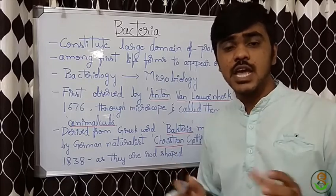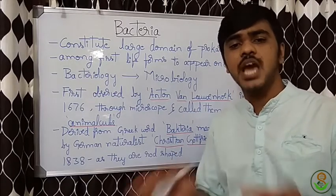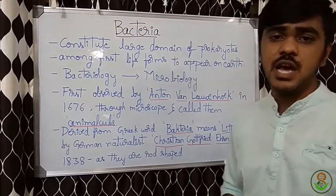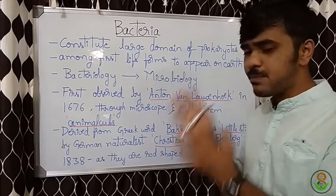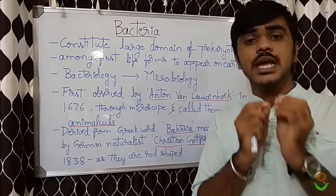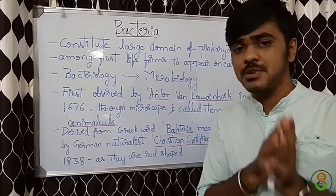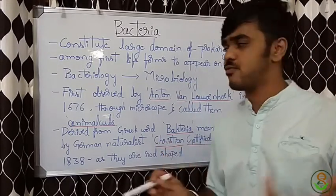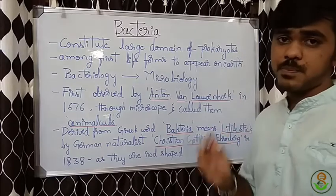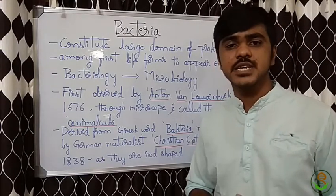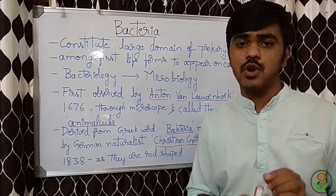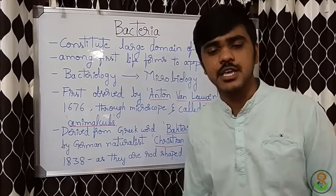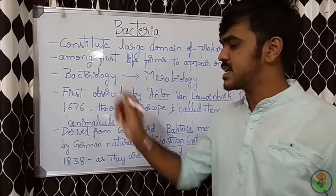Bacteria can live in many habitats — it has a varied number of habitats in which it can survive. As it's a primitive organism, it was present when life came into existence, among the first life forms to appear. The special thing about bacteria is it contains a specialized cell wall, which I will discuss when we cover morphology. The study of bacteria is known as bacteriology.